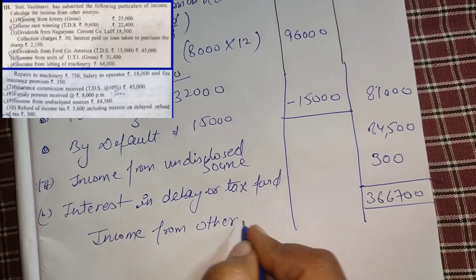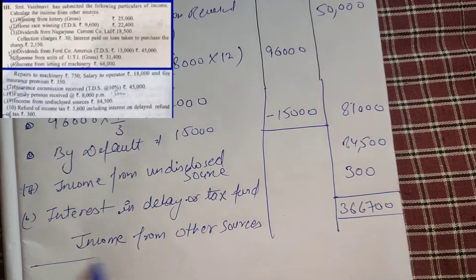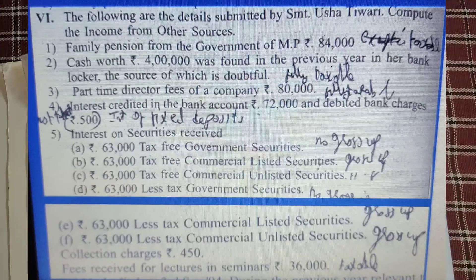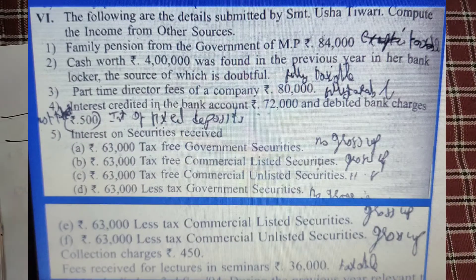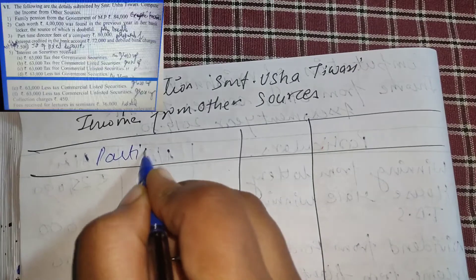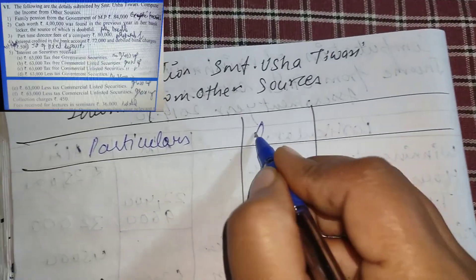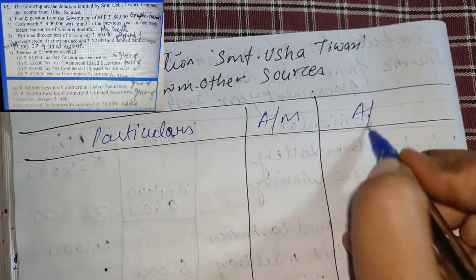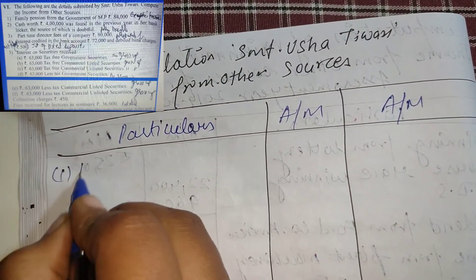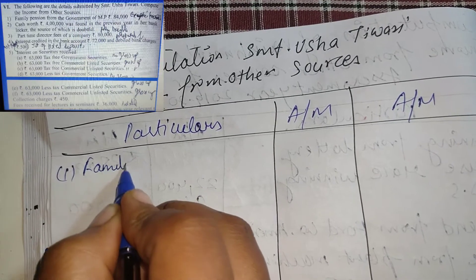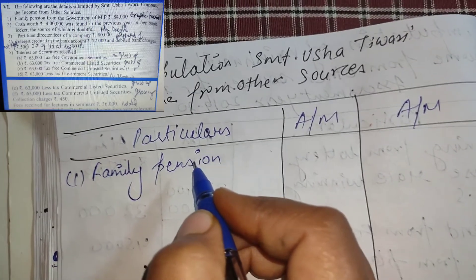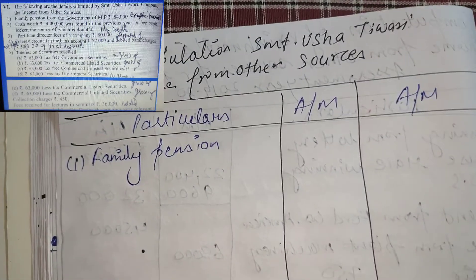I hope you understood this question. If not, you can ping me in the comments and I will explain. Here is the second question — also important. Interest on securities received is important here. Compute the income from other sources for Shreemati Usha Tiwari. Assessment year is not given. First point: family pension from Government of MP.